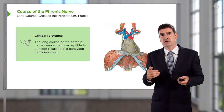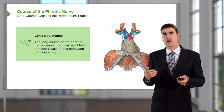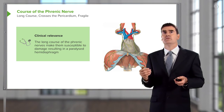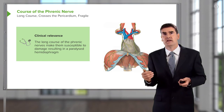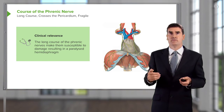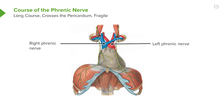The important thing about the phrenic nerve is that it has a long course, and because it crosses the pericardium it is quite fragile. It is relatively easy for a single phrenic nerve to be damaged by multiple different methods — often by cardiac procedures, for example. That will leave that side's diaphragm paralyzed, so it will not contract during ventilation and its contribution to ventilation will be lost.